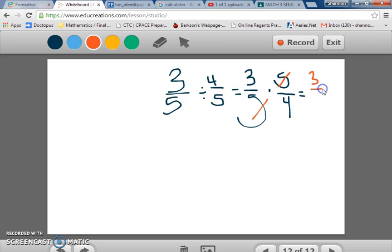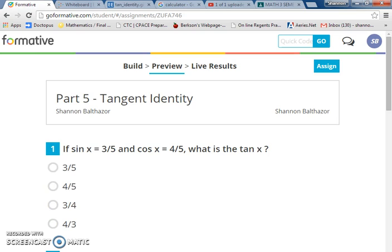We can reduce ahead of time and cancel this 5 and this 5 and end up with 3/4. So the answer for the first one is 3/4. The reason the answer is 3/4 is because we just take the numerator of sine and put it over the numerator of cosine. Denominators are going to cancel every time. So the sine of x is 3/5 and cosine of x is 4/5. I don't need to actually do any work. I can just put 3 over 4 and 3/4 is going to be the solution.